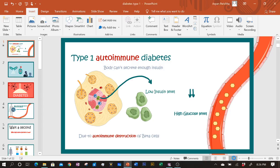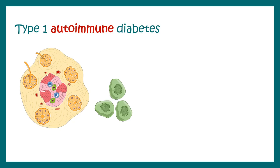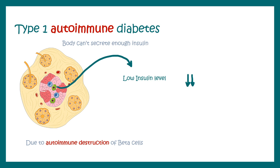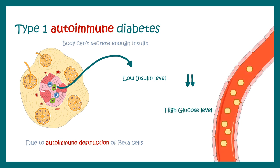In this video we'll talk about type 1 autoimmune diabetes. Type 1 autoimmune diabetes leads to destruction of the pancreatic beta cells, which secrete insulin. As a result, the body faces a very low level of insulin, which results in high blood glucose levels and low glucose mobilization to the tissues.